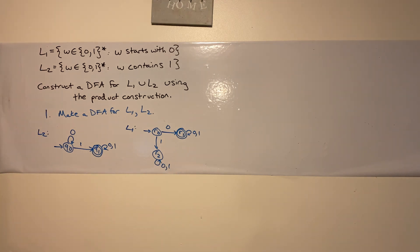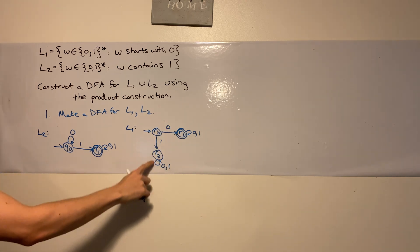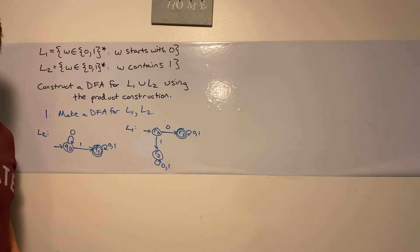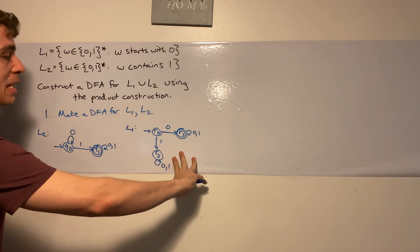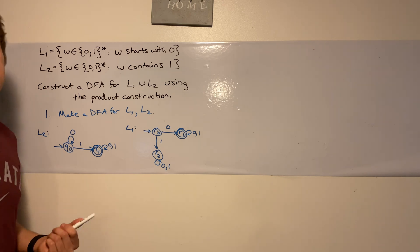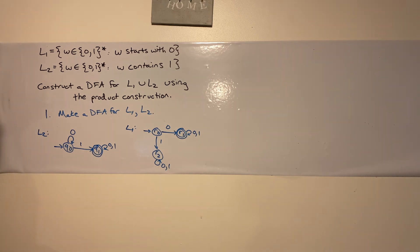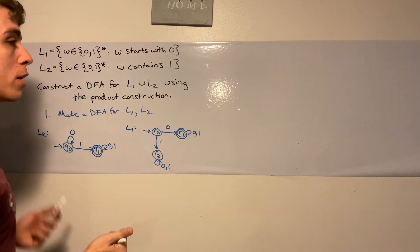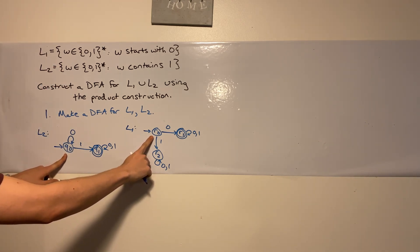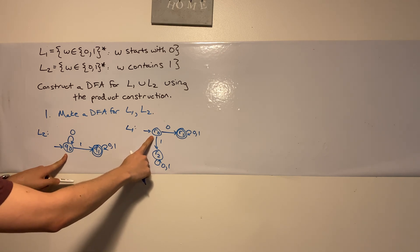So how can we use the product construction easily without having to think too hard? So notice that we have a DFA on two states right here and a DFA on three states right here. So whenever you're using the product construction, it's always the product of the number of states, hence where the name comes from. So there are two states here, three states here. So in the end, last I checked, I think two times three is equal to six.